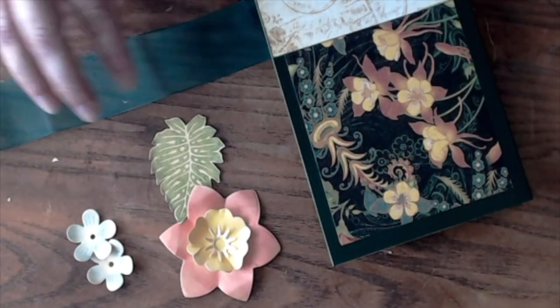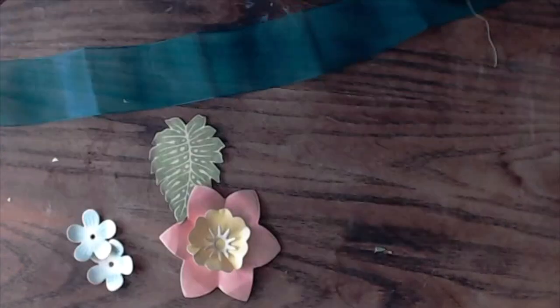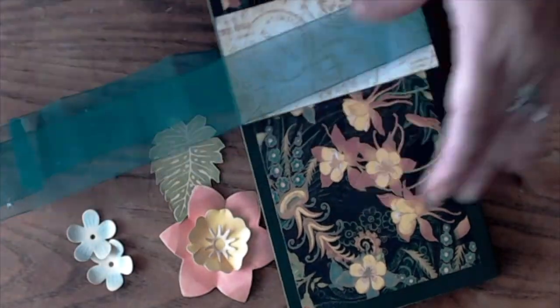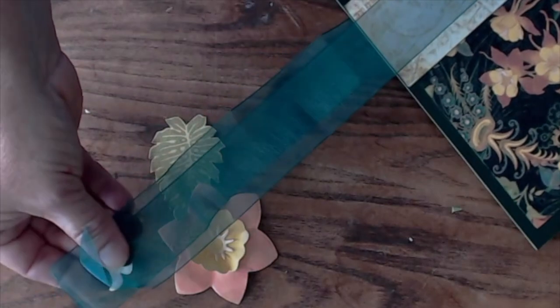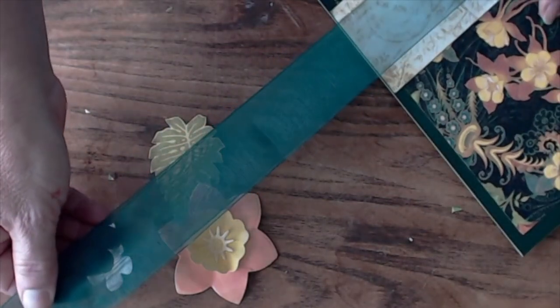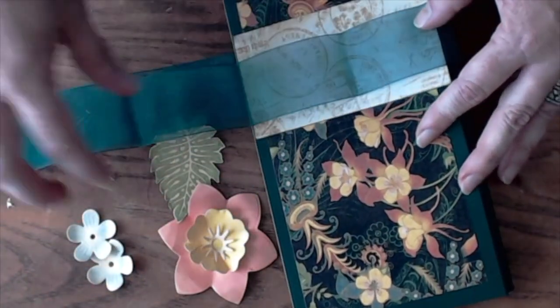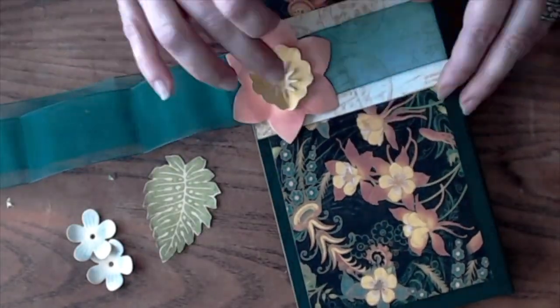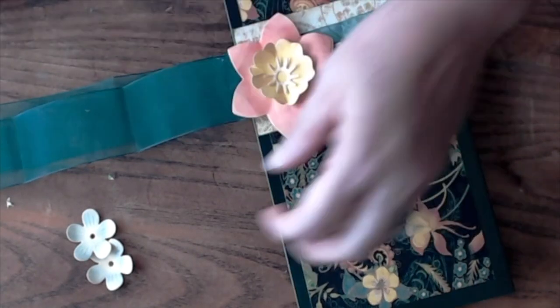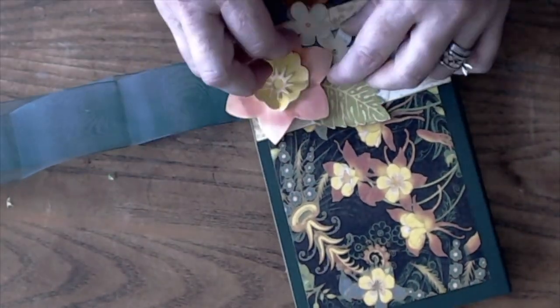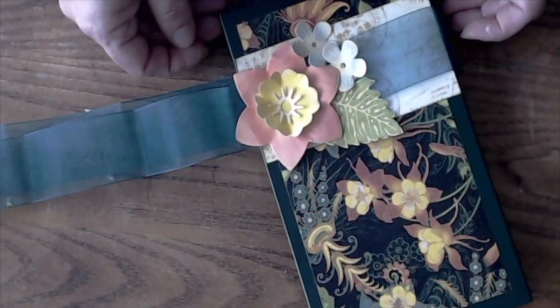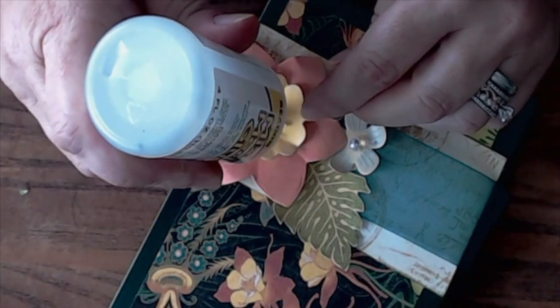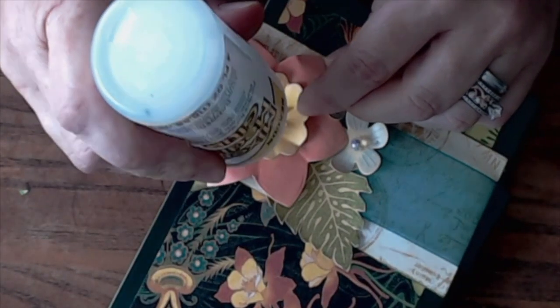Fold ribbon in half and place the album in the center. Glue in place over the strip of patterned paper on the front. Glue the stamped leaf and the dimensional flowers in place on the edge. Glue coordinating crystal beads to the centers of the flowers and let the glue dry completely.